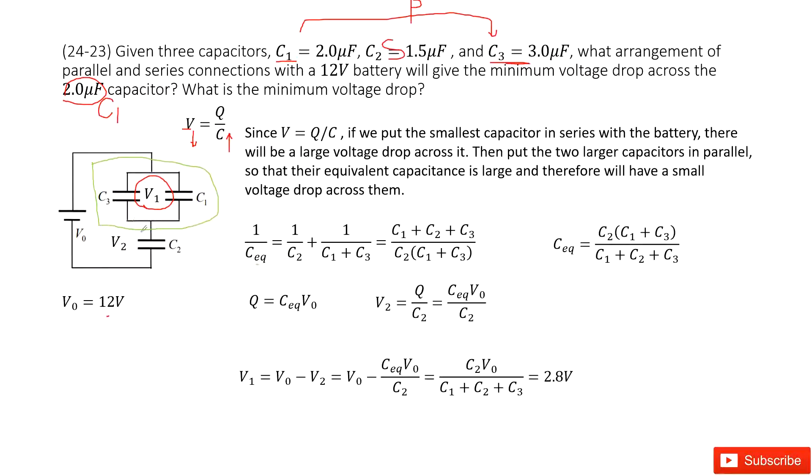This is the equivalent capacitance for the whole circuit. This is the series connection of C2 with C13. Use this equation, and C13 is C1 plus C3. In this case, you can get the equivalent capacitance for the whole circuit.